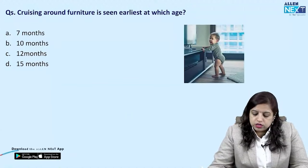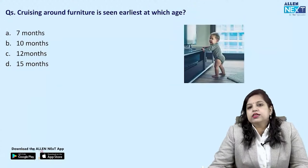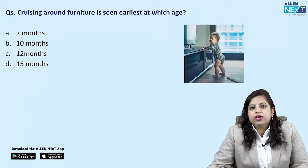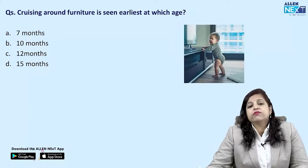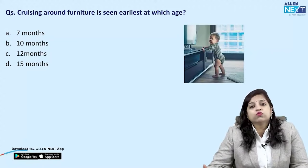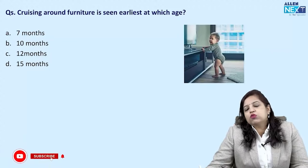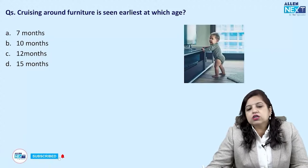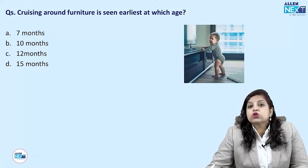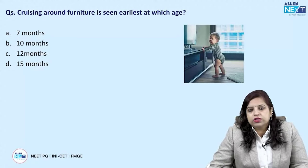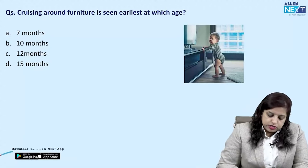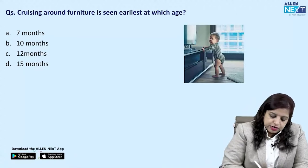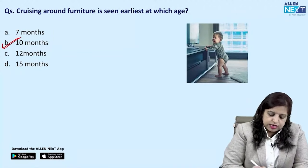Cruising around furniture is seen earliest at which age? When the child moves with the help of taking support of furniture or somebody around, that is known as cruising around furniture, as shown in the diagram. The correct answer is 10 months of age.